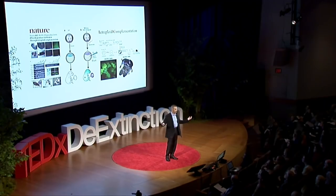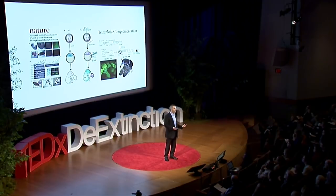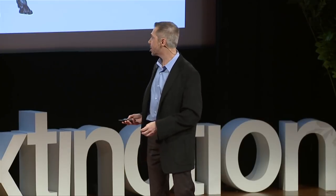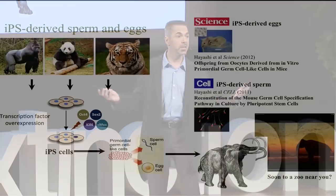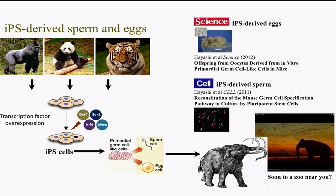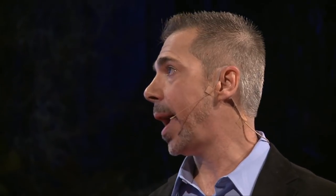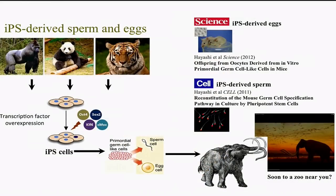We can make iPS cells from almost any animal — we've made them from horses and avian species, very readily, unlike normal cloning. But the more likely approach is to turn iPS cells directly into eggs and sperm. You just take a little piece of skin from any endangered animal — or a closely related species; for the mammoth, you'd start with an elephant. You add transcription factors, turn them into iPS cells, and those can be coaxed into primordial germ cells and then into either sperm or eggs.